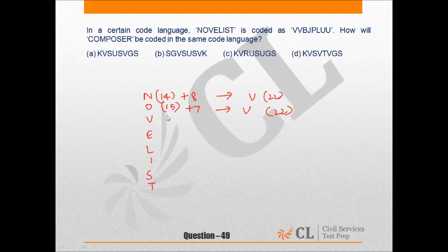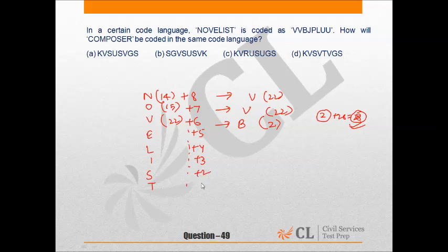The position of V is 22 and the position of B is 2. We can say that 2 means 2 plus 26 also, so it may be said as 28. So 22 plus 6 equals 28. Similarly, you will see that it would be plus 5, plus 4, plus 3, plus 2, and plus 1.